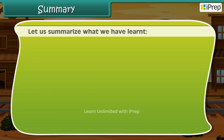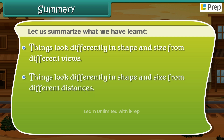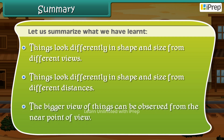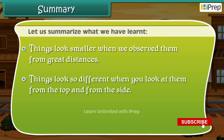Let us summarize what we have learnt in this module. Things look differently in shape and size from different views and from different distances. The bigger view of things can be observed from the near point of view. Things look smaller when observed from great distances. Things look so different when you look at them from the top and from the side.